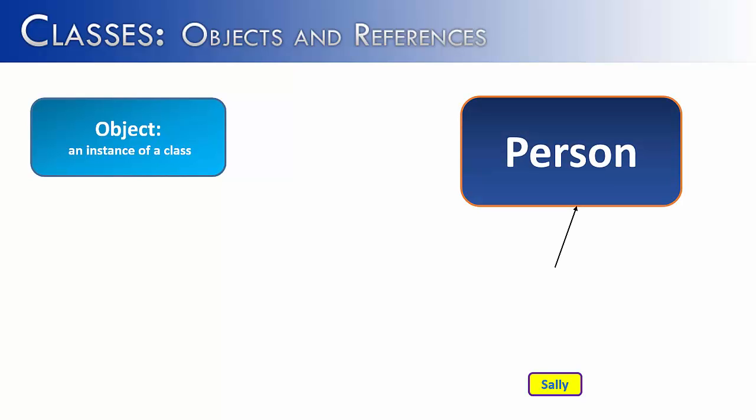Next, now that we understand what an object is, how do we create one in Java? Well, it actually follows a standard format. And the code for that would look something like this, person Sally equals new person. And let's examine this code closer.